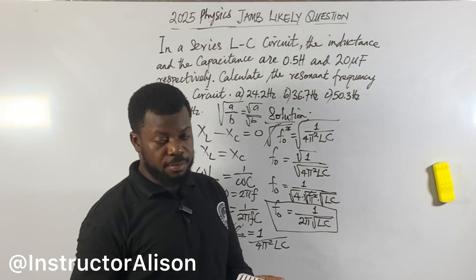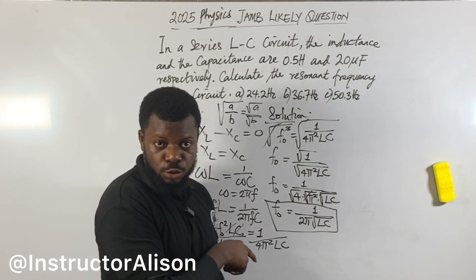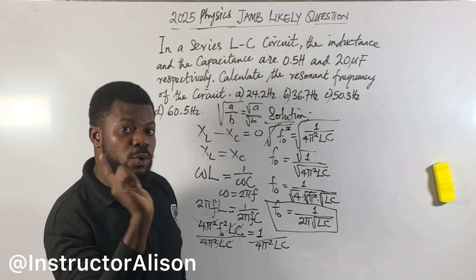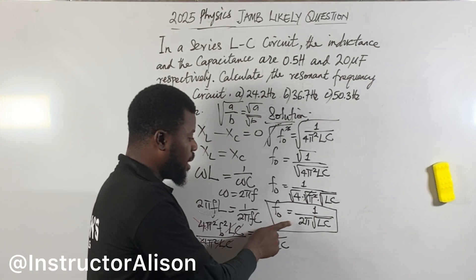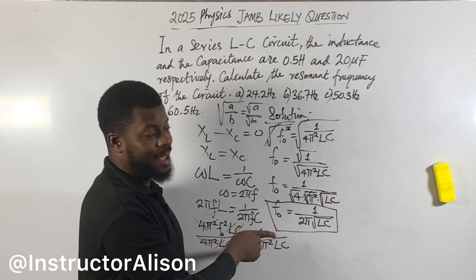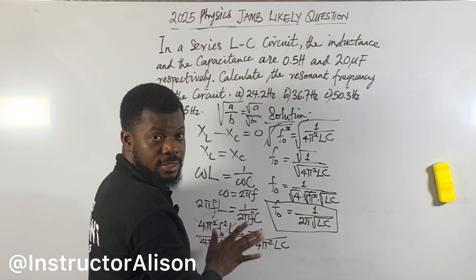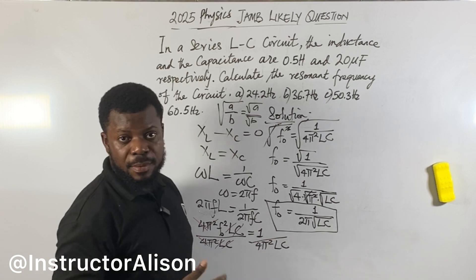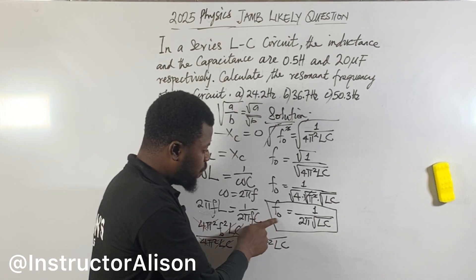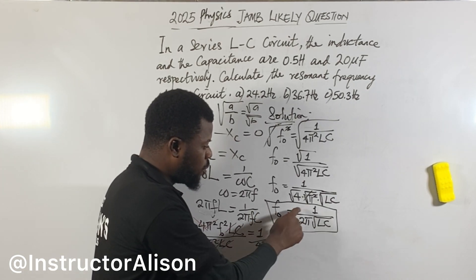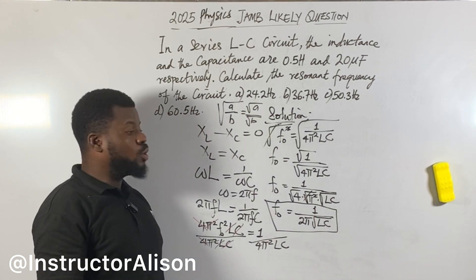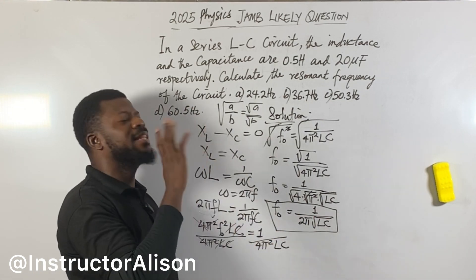This is the formula for resonant frequency derived step by step. For your exam — especially for JAMB — just memorize: F naught equals 1 over 2 pi times the square root of LC. If you practice it always, you won't forget it. It's the shortcut — just remember this formula and you're good.